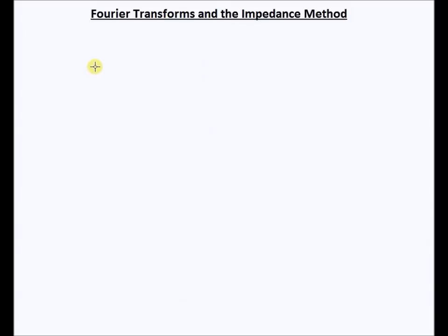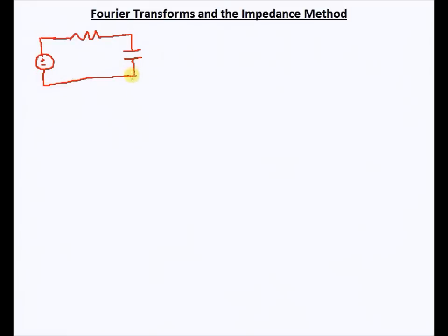In this tutorial I'd like to connect the impedance method which we learned in 6WO2x with the Fourier transform. To recall what we did in 6WO2x, we had this RC circuit — the same RC circuit used in the practical convolution tutorial. We have a capacitor, a voltage source with plus and minus terminals, and a ground node. This is R, this is C, and this is the input voltage Vi. We had this input voltage and we had to find Vo. What we did in 6WO2x was we used the impedance method.